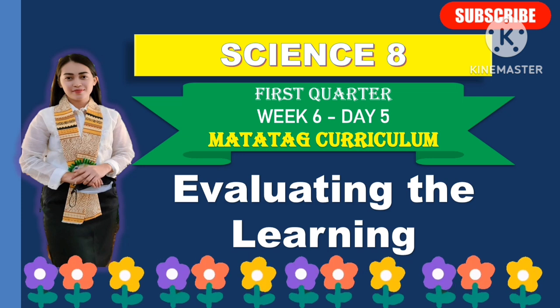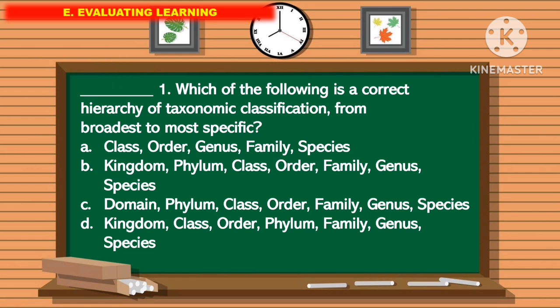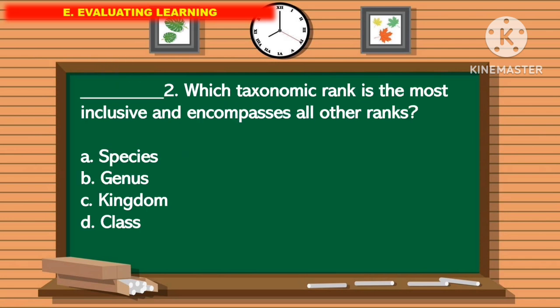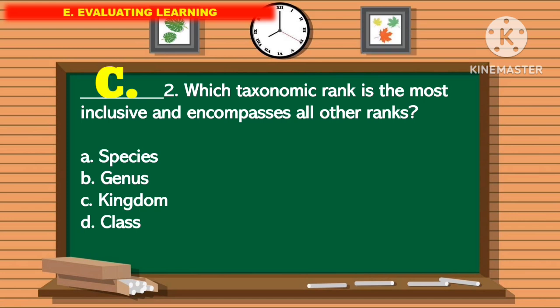For the first question: which of the following is a correct hierarchy of taxonomic classification from broadest to most specific? The correct answer is letter C. For question number 2: which taxonomic rank is the most inclusive and encompasses all other ranks? The correct answer is letter C.